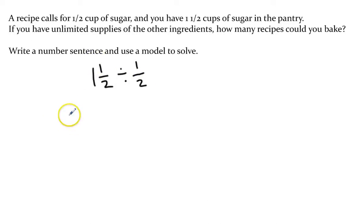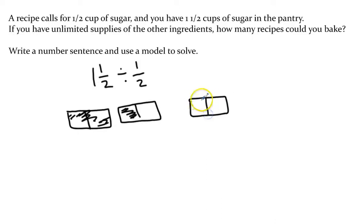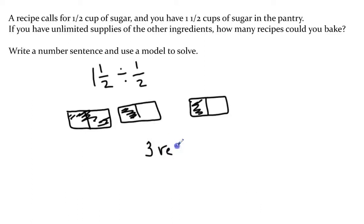So that's my number sentence. If I go ahead and draw my model — here's one whole and half more. I'm going to go ahead and separate these into halves to make this easier. And then we have our half. We're looking at how many of these can fit in here. We could make three recipes: one can fit here, one can fit here, and one can fit here. So I would be able to make three recipes.